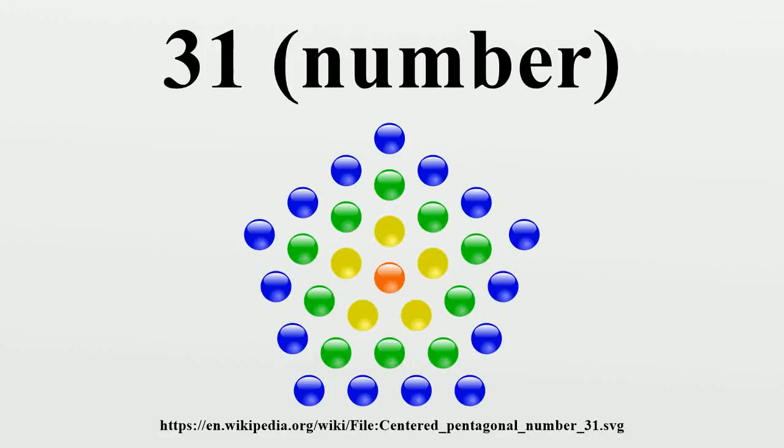31 is the natural number following 30 and preceding 32. In mathematics, 31 is the third Mersenne prime as well as the fourth primorial prime, and together with 29, another primorial prime, it comprises a twin prime.